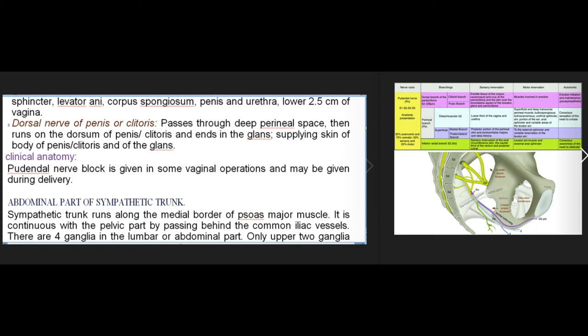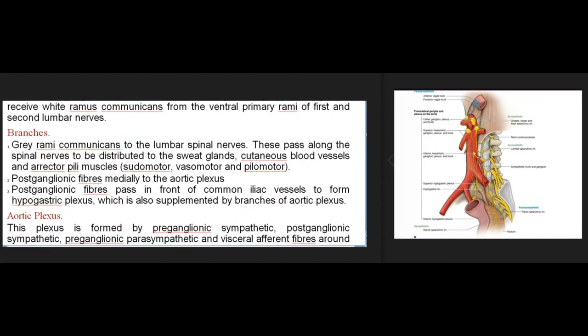Abdominal part of sympathetic trunk: the sympathetic trunk runs along the medial border of psoas major muscle. It is continuous with the pelvic part by passing behind the common iliac vessels. There are four ganglia in the lumbar/abdominal part. Only the upper two ganglia receive white rami communicantes from the ventral primary rami of the first and second lumbar nerves. Branches: (1) Gray rami communicantes to the lumbar spinal nerves — these pass along the spinal nerves to be distributed to the sweat glands, cutaneous blood vessels and erector pili muscles (sudomotor, vasomotor and pilomotor).